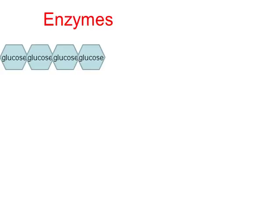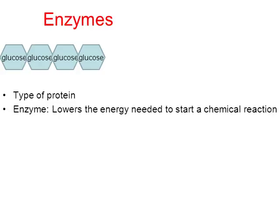I want to give special attention to a category of protein called enzymes. Enzymes are a type of protein, and there are thousands of different types. Their job, in general, is to lower the energy needed to start a chemical reaction. When cells perform their cellular jobs, without enzymes they would need a lot more energy to achieve their needs. With the use of enzymes, cellular needs are performed a lot more efficiently.